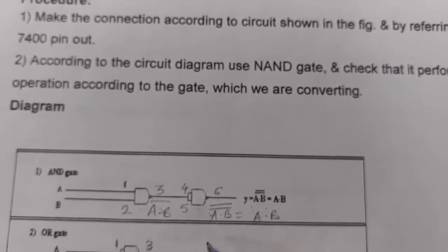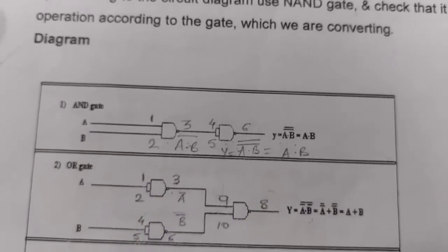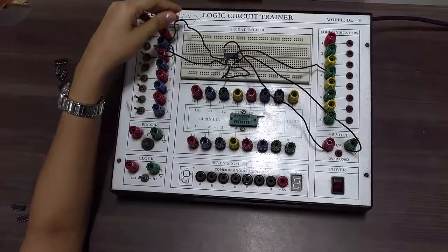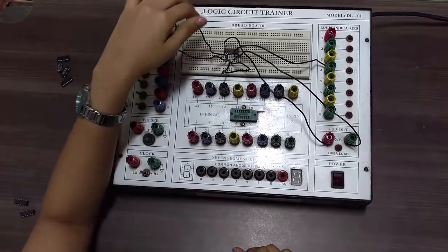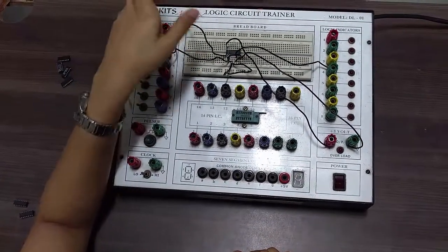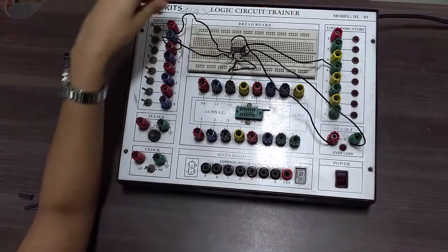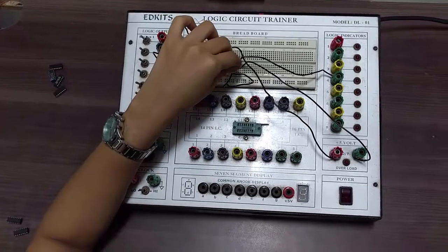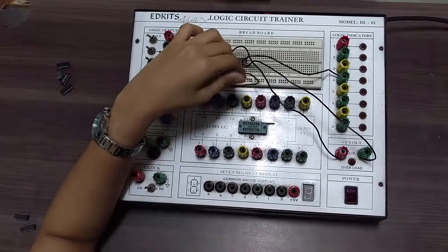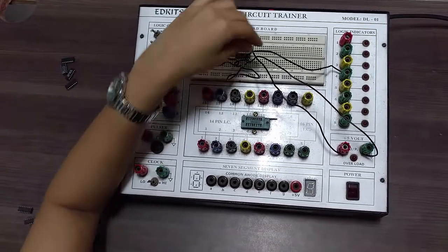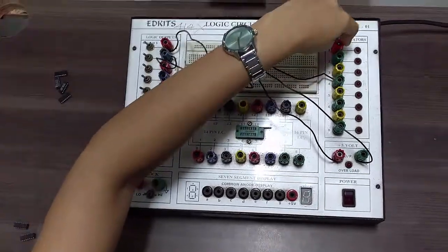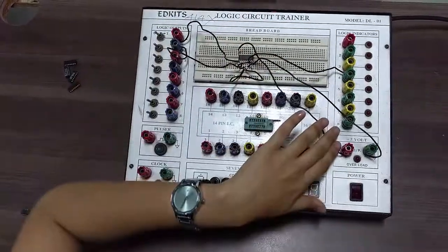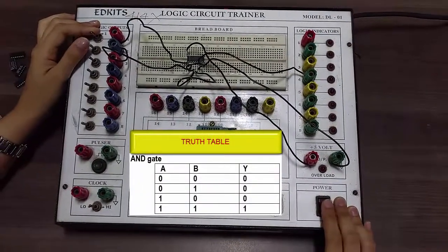After this operation we get (A·B bar) bar, which gives us AND gate. We use 2 NAND gates to get AND gate. Pins 1 and 2 are the inputs, pin 3 is the output which goes as input to the second gate where pins 4 and 5 are shorted and pin 6 is taken out as the output given to the logic indicator. Pin 7 is connected to ground and pin 14 is connected to VCC.